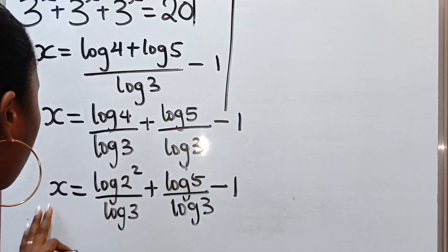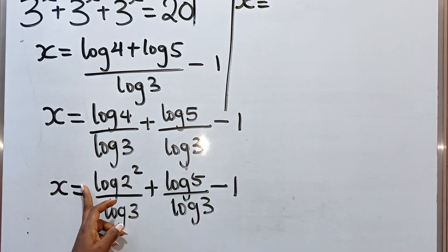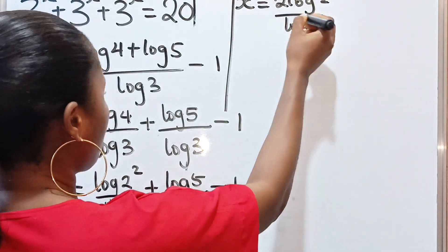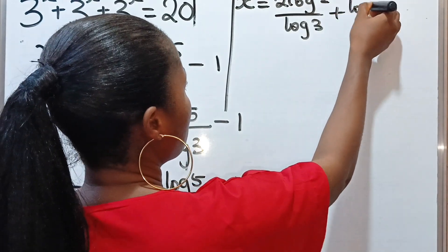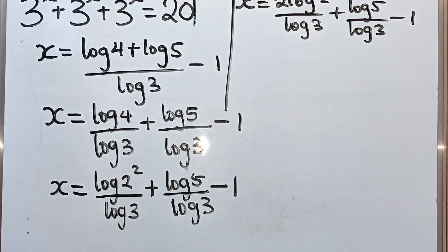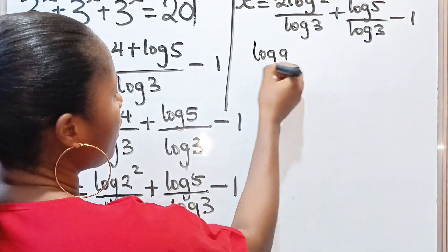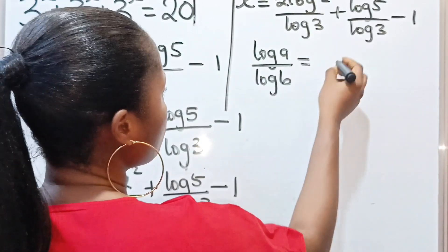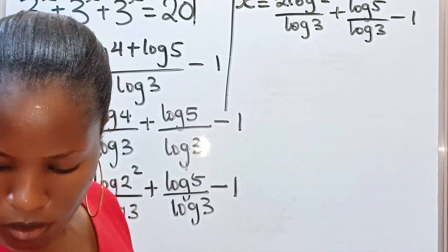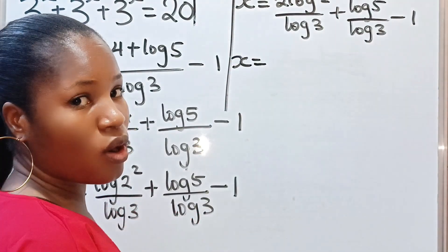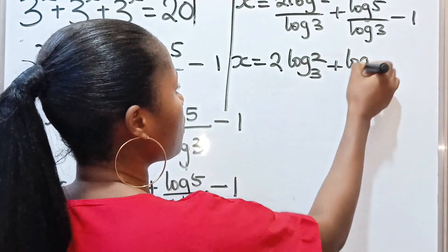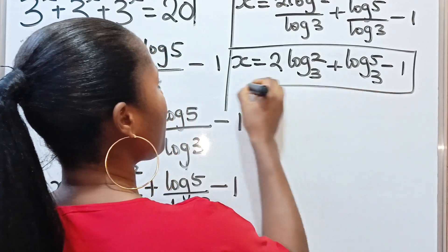Now, log 4 equals 2·log 2, so this two will come down to multiply log 2. So we have x is equal to 2·log 2 divided by log 3, plus log 5 divided by log 3, minus 1. Remember that log A divided by log B is equal to log A base B. So we can write this as x is equal to 2·log₂(base 3) plus log₅(base 3) minus 1. And this is the value of our x.